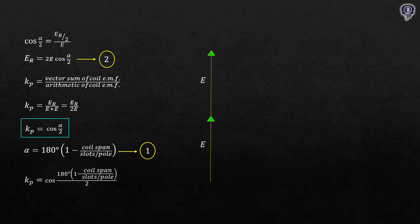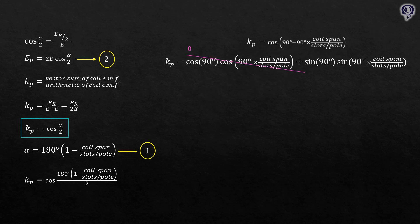Simplify and we'll get the cosine of angle difference. Expanding this, we'll see that the cosine of 90 is equal to 0. So this term cancels out. Sine of 90 equals to 1. So we'll get this equation in terms of coil span per slots per pole.